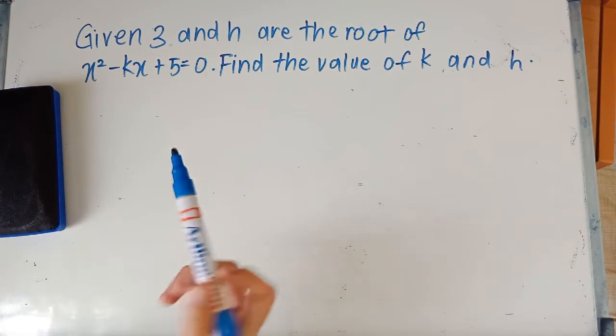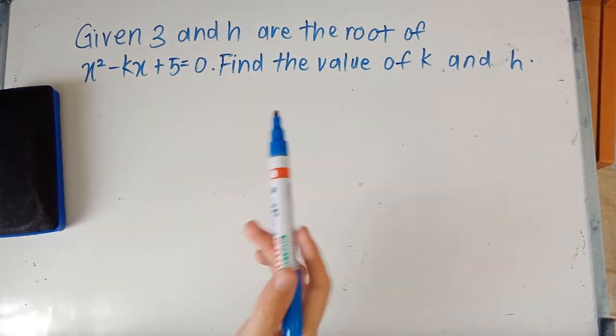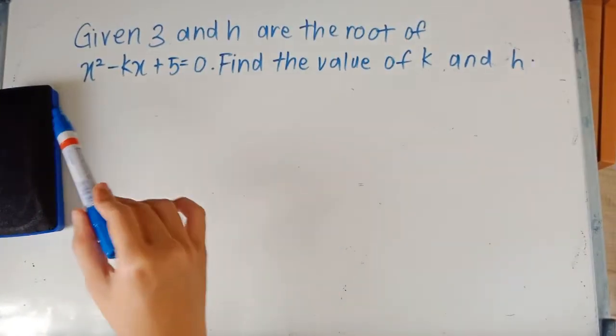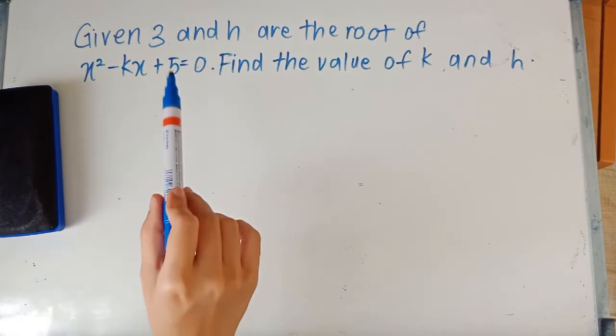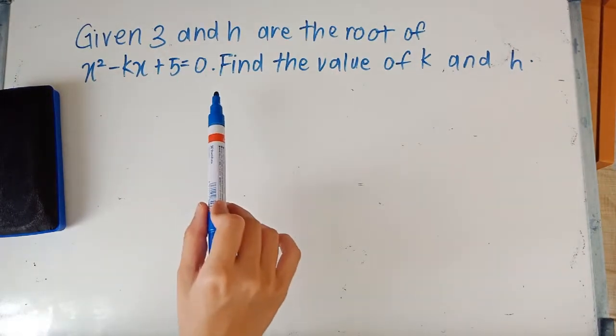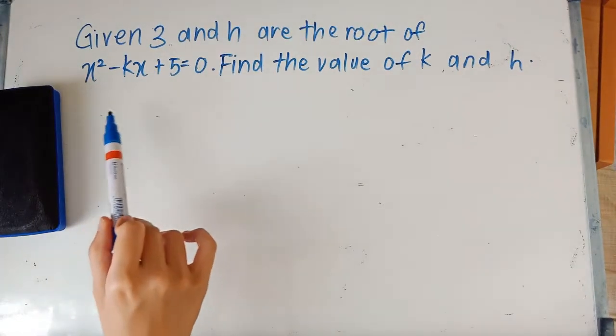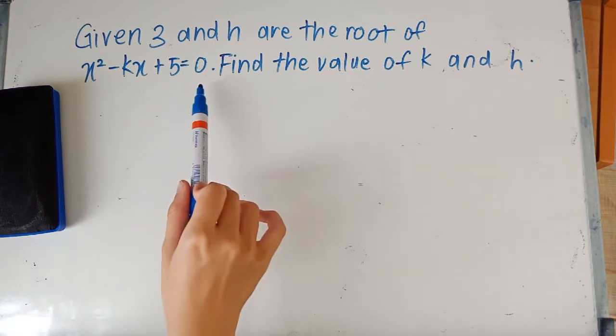So today's question is from chapter 2 and we're going to tackle this question: given that 3 and h are the root of x² - kx + 5 = 0, find the value of k and h.